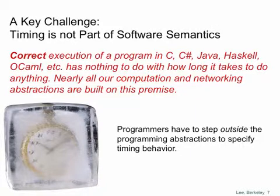The key challenge is that timing is not part of the semantics — the meaning — of software. Correct execution of a program written in C, C-sharp, Java, Haskell, OCaml, or any other widely used programming language today has nothing to do with how long it takes to do anything. Nearly all of our computation and networking abstractions are built on this premise. Timing emerges in these systems merely as an accident of the implementation. As a consequence, when programmers need to specify temporal behavior, as they typically do in cyber-physical systems, they have to step outside the programming abstractions to do so.